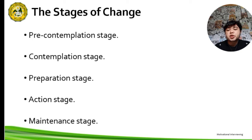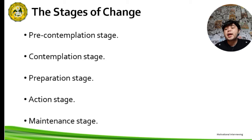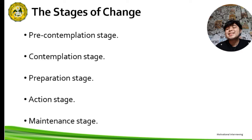Now, the stages of change. The stages of change model assumes that people progress through a series of five identifiable stages in the counseling process. In the pre-contemplation stage, there is no intention of changing a behavior pattern in the near future — this is essentially denial. In the contemplation stage, people are aware of the problem and are considering overcoming it, but have not yet made a commitment to taking action to bring about the change.